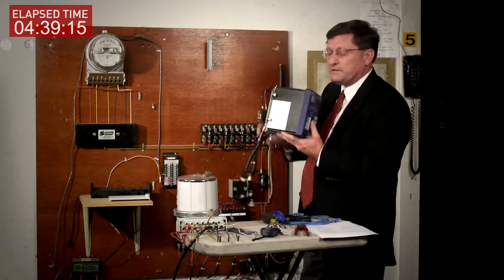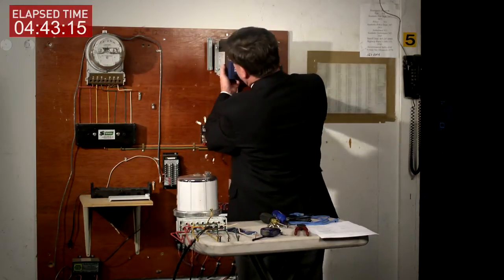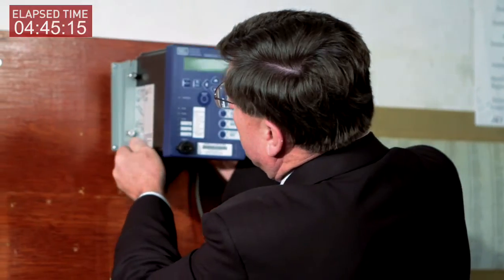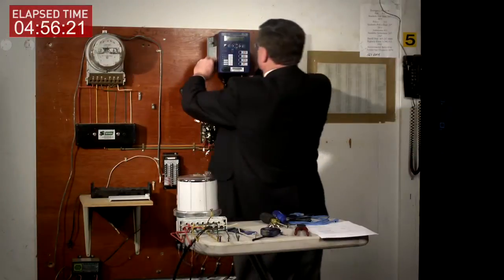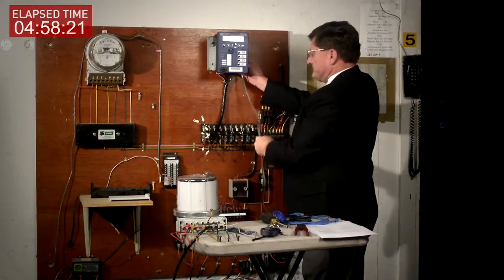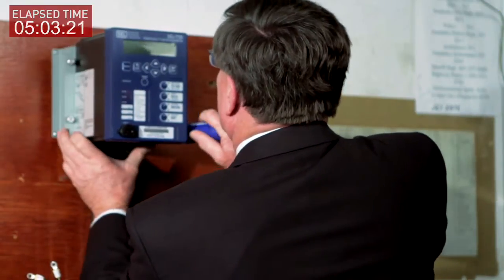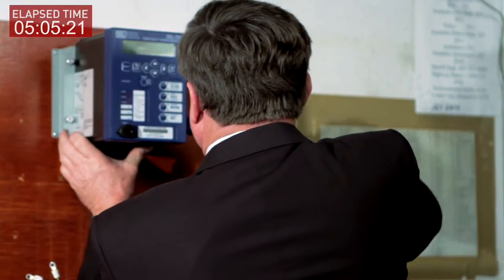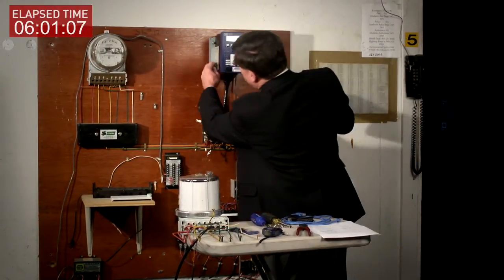Now we're going to simply install our SEL 735 meter. We're going to do this by attaching two mounting screws here. Now we have our SEL 735 attached to the panel. We're going to install two more screws for mounting on the opposite side. Now as you can see, we have our SEL 735 properly mounted on our panel.